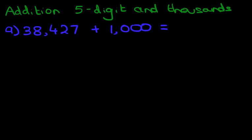Now I'm sure most of you, if not all of you, can do this just by looking at this question. But we are going to do this using the vertical format. So the first stage is to rewrite this question into columns. So let's do that over here. 38,427 plus 1,000.